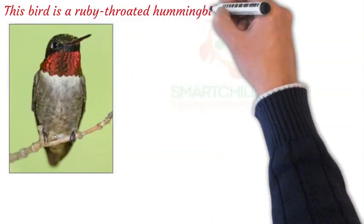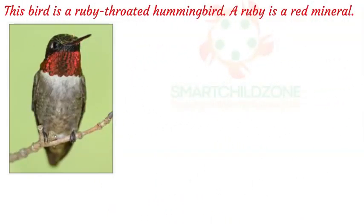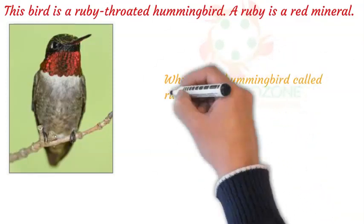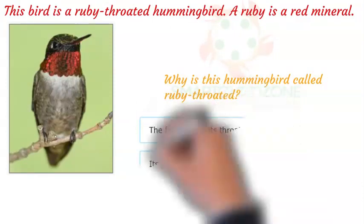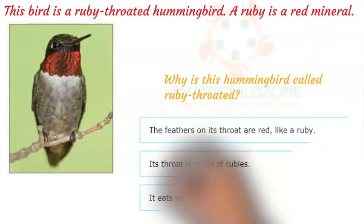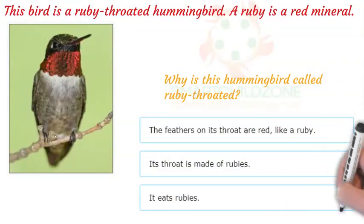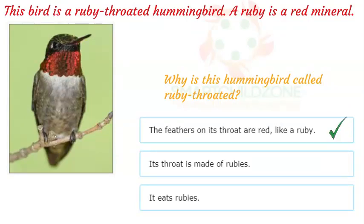This bird is a ruby-throated hummingbird. A ruby is a red mineral. Ruby-throated hummingbirds get their name from the ruby-colored feathers on their throat.